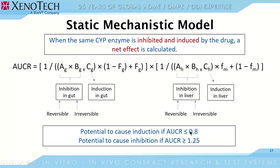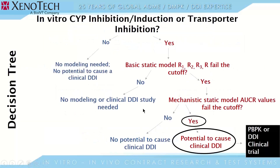If the AUCR value falls within 0.8 to 1.25, we can conclude there is an unlikely risk for clinical DDI for the drug in question. If the static mechanistic AUCR value also fails the cutoff, it suggests a potential clinical DDI, which can be further pursued either by PBPK modeling or by conducting an actual clinical DDI study.